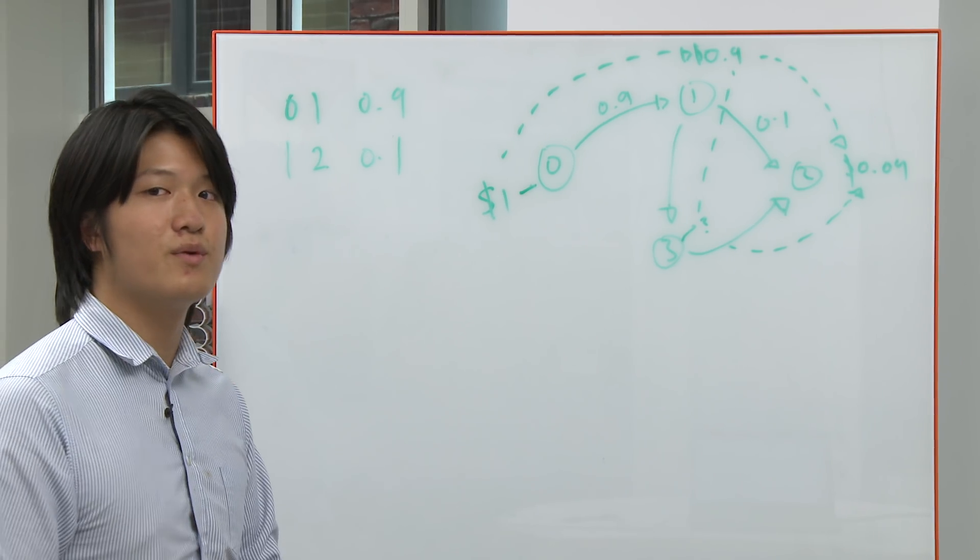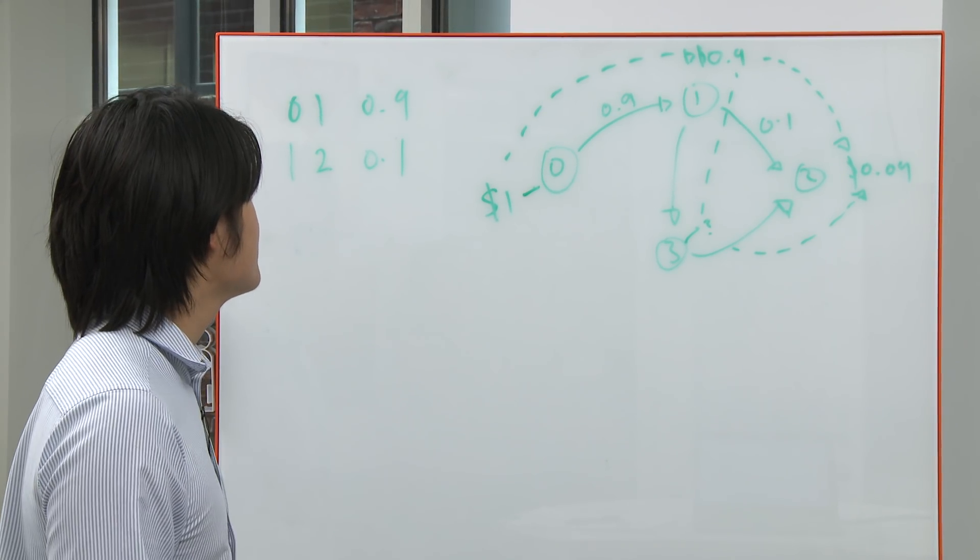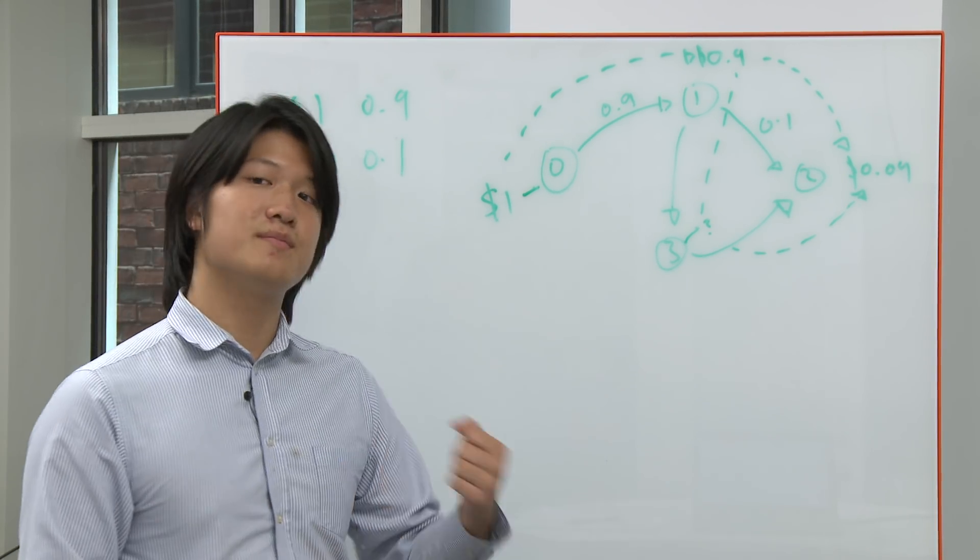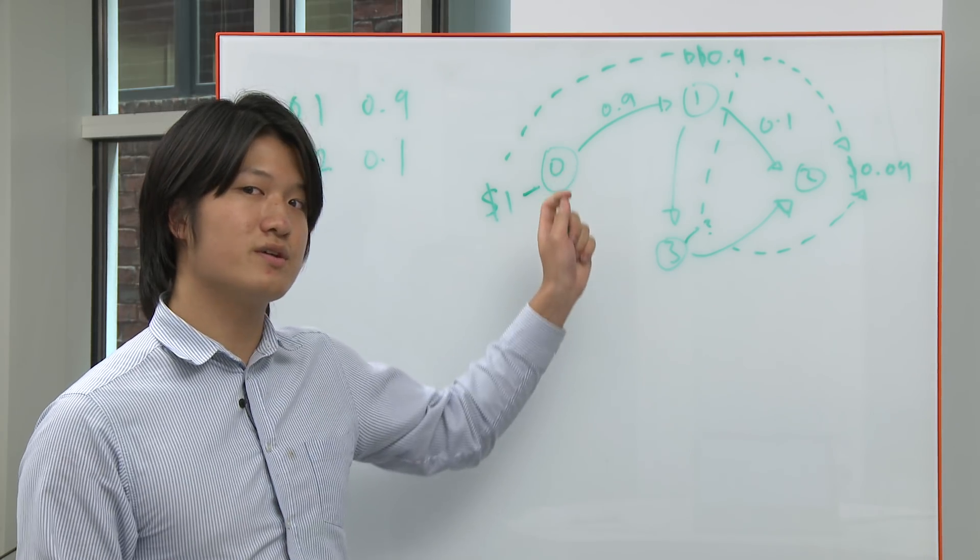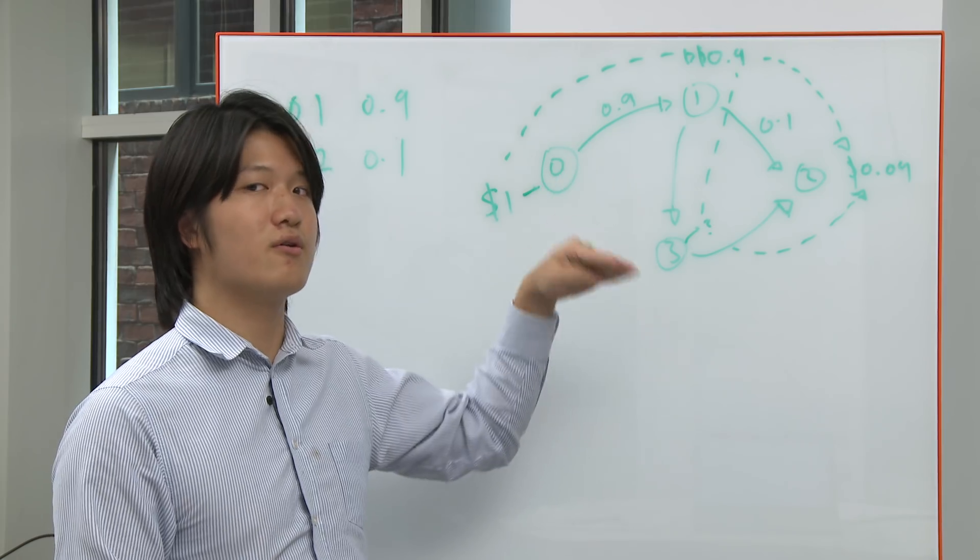So the way that we'll determine whether or not this is the case is by keeping track of the maximum and minimum possible values that you can get if the edges were a little bit bigger or a little bit smaller.